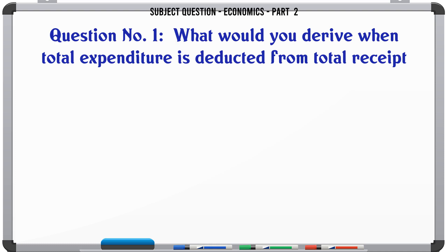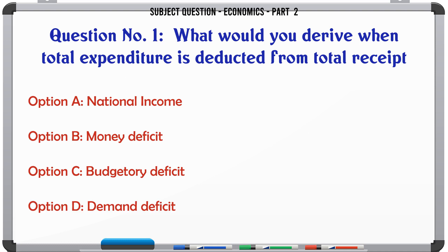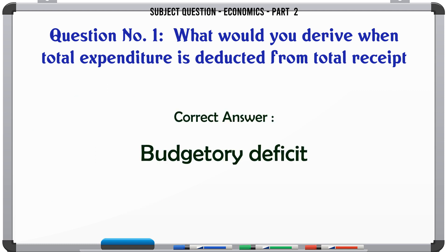What would you derive when total expenditure is deducted from total received? A. National income. B. Money deficit. C. Budgetary deficit. D. Demand deficit. The correct answer is: Budgetary deficit.